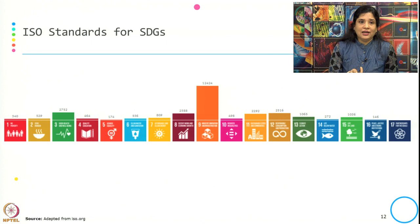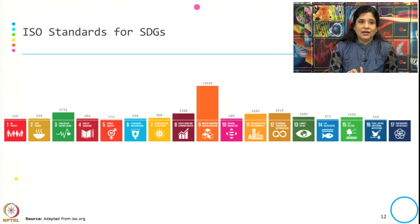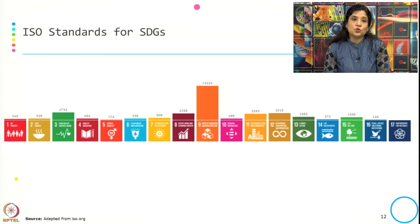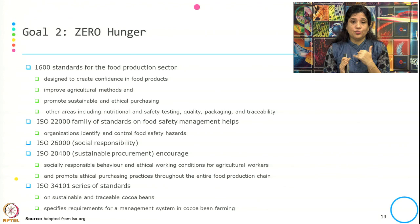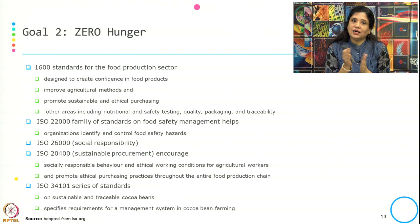Let us see a few of the SDGs and their associated standards. Goal 2 is Zero Hunger. There are 1,600 standards for the food production sector, and the role of these standards is designed to create confidence in food products, improve agricultural methods, promote sustainable and ethical purchasing, and cover other areas including nutritional safety, nutritional and safety testing, quality packaging, and traceability.